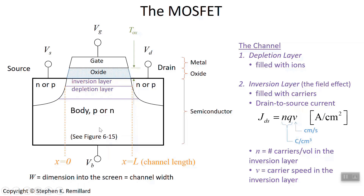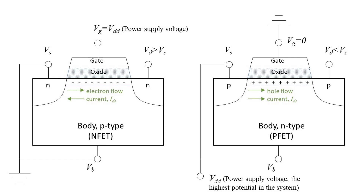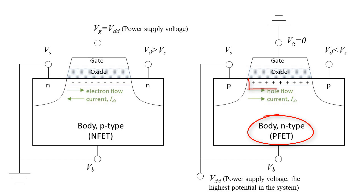Now let's put some voltages in this picture and ask about the direction that current flows. Let's begin with a P-type body. If you have a P-type body, the channel inversion layer fills up with electrons, and so it's referred to as an N-FET. If it's an N-type body, the channel fills up with holes and it's referred to as a P-FET. If you have a channel filled with electrons, there are a couple of voltage configurations we can think about.